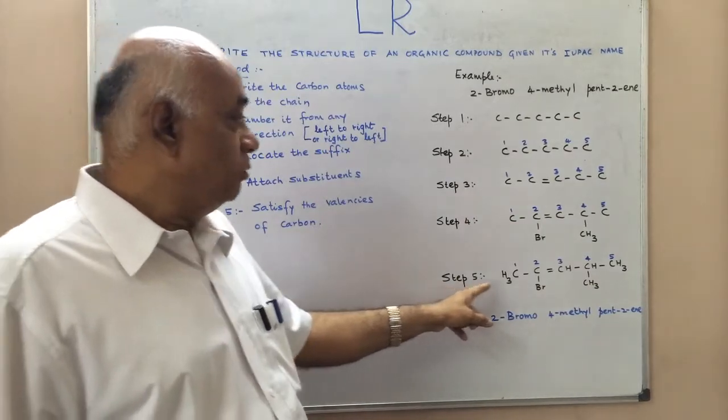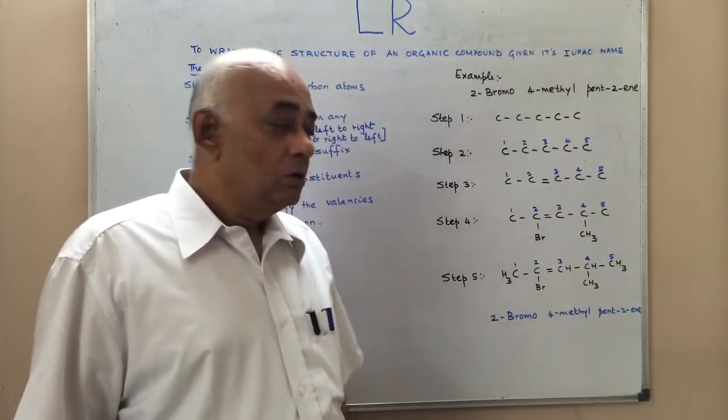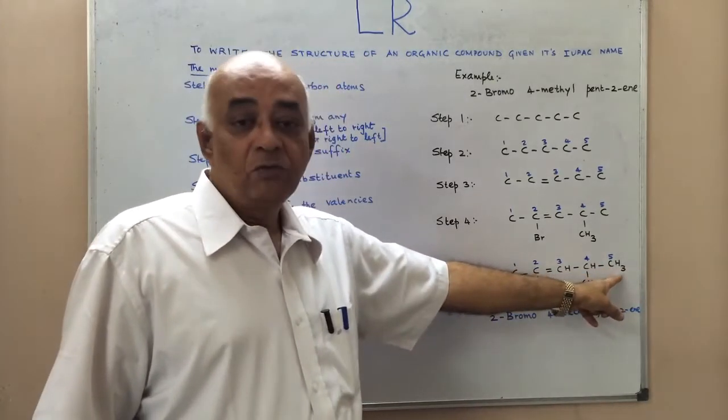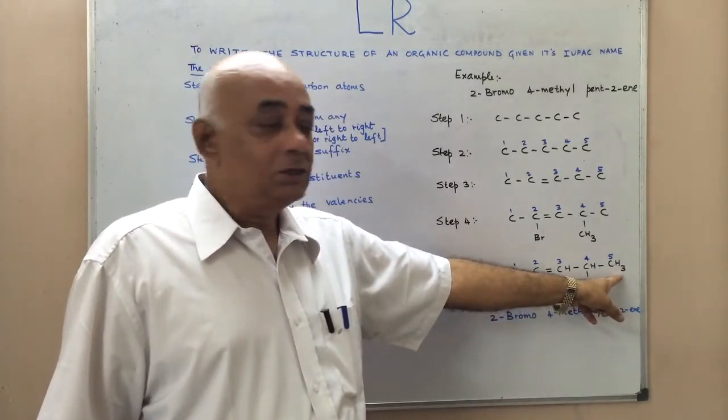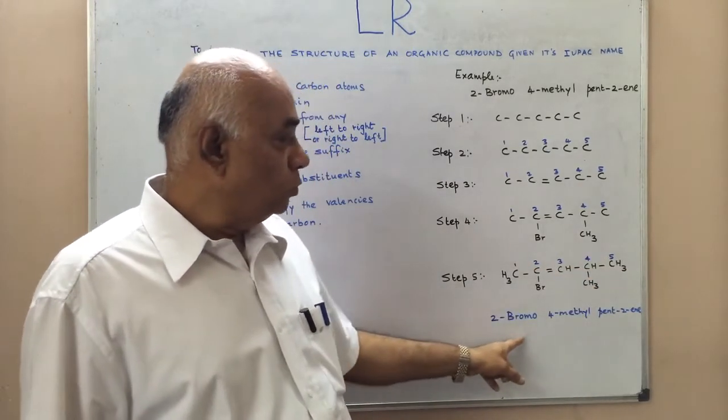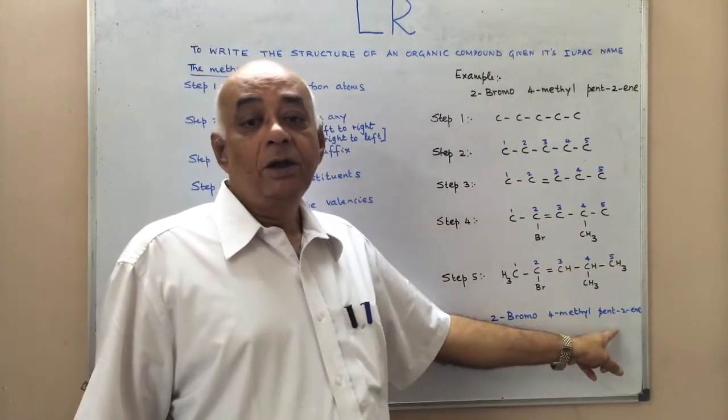Step 5, we need to satisfy the valencies of carbon, and we have done that by completing the addition of hydrogens or attaching the hydrogens onto the respective carbons. And we get our compound 2-bromo, 4-methyl, pent, 2-ene.